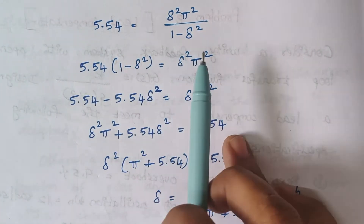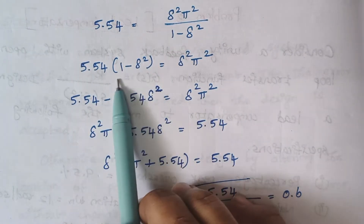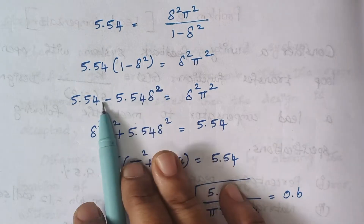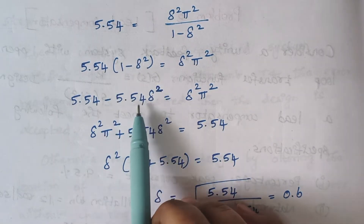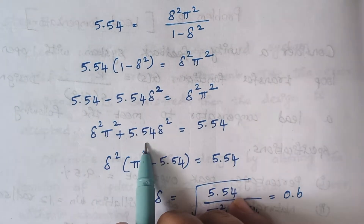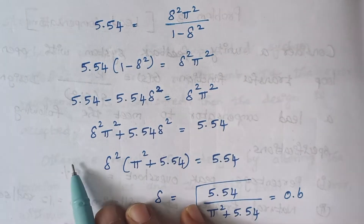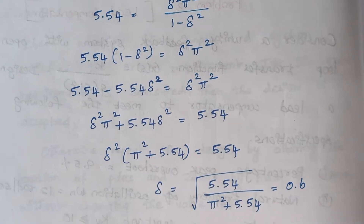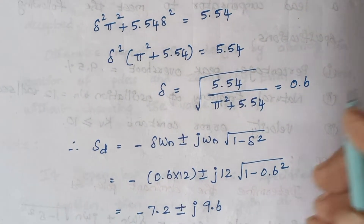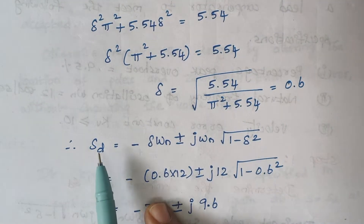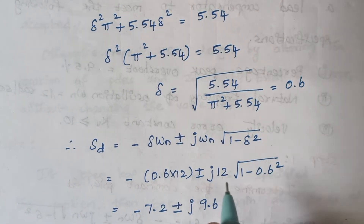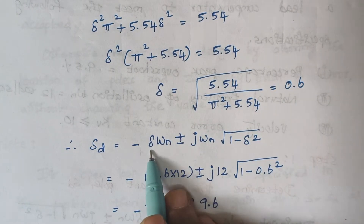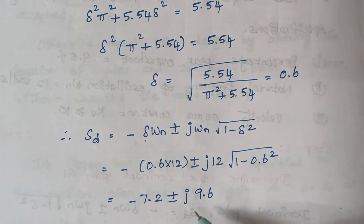We rearrange and find the value. Moving 1 minus zeta square to the left hand side, we multiply and rearrange the terms, bringing the zeta terms together. Moving this term to the right hand side it becomes plus, and 5.54 remains. Zeta square is taken as common and we further solve. Finally, the value of zeta is found to be 0.6. Substituting the known values of omega n and zeta into the dominant pole formula, we get the dominant pole as minus 7.2 plus or minus j 9.6.